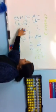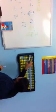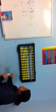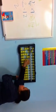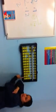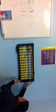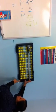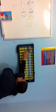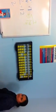Now, thirty-six divided by two. The answer will be two digits. Two times one is two. Moving the pointers - two times eight is sixteen. The answer is eighteen.